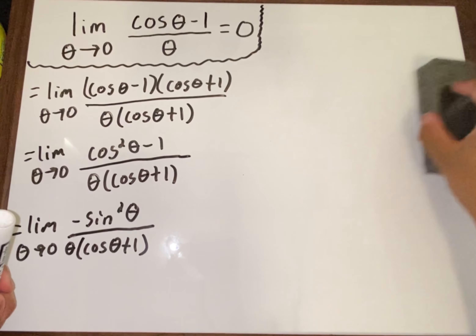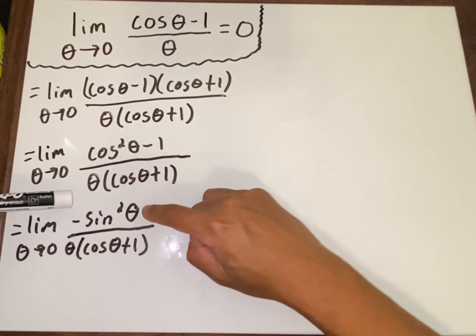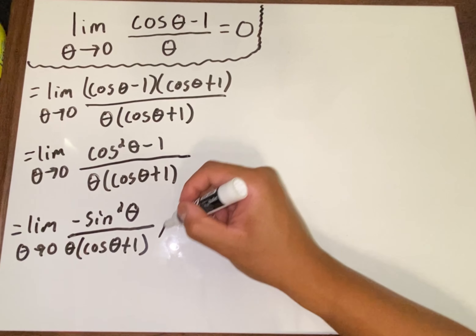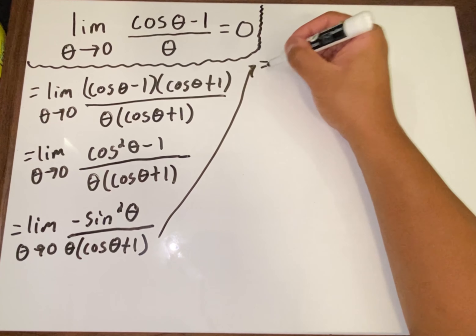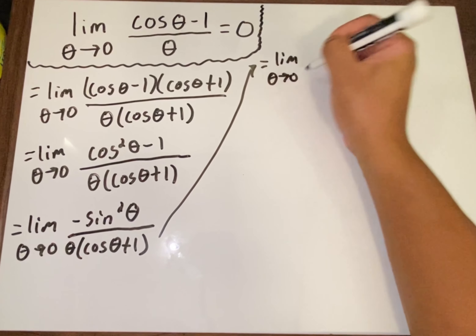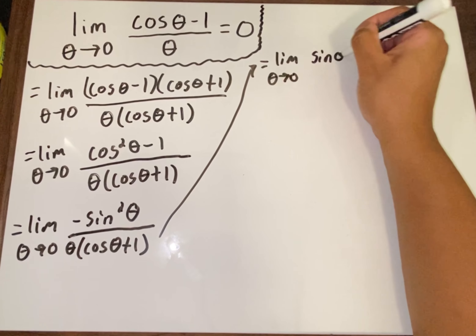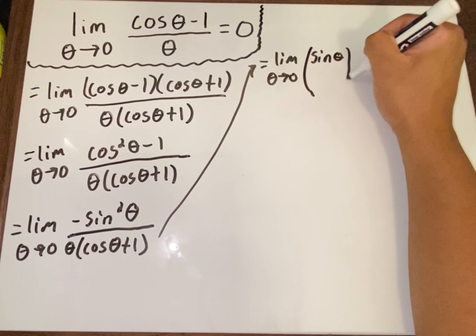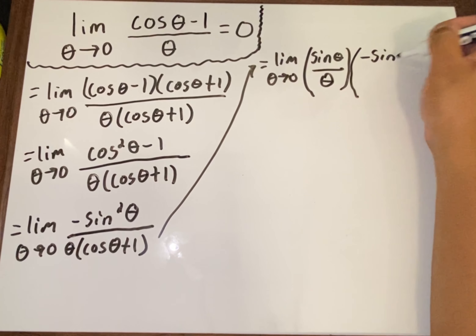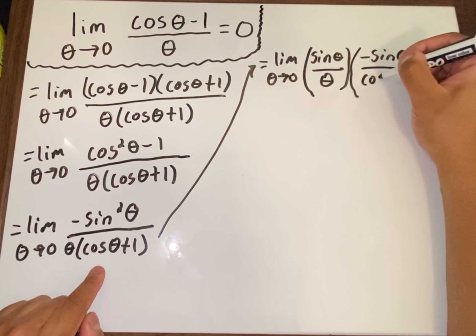That helped a bit, but now we're going to split this thing up. There are two sine factors because of the squared, so I'll split them: one part is (sin θ)/θ, and the other is negative sin θ over (cos θ + 1).